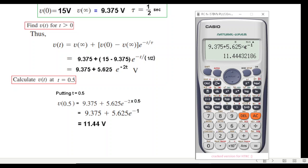I'll clear the calculator. In composite mode: 9.375 plus 5.625 multiplied by e raised to the power minus 1. Press shift button for e, then e power minus 1. The answer is 11.444 volts.